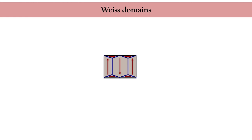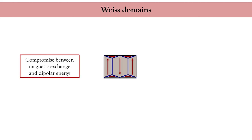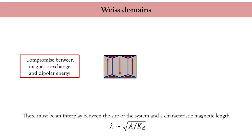You cannot repeat this procedure indefinitely because each magnetic domain wall you create costs energy. As a consequence, the magnetic texture of a given material comes out of a compromise between the magnetic exchange, the anisotropy, and the dipolar energy. The average size of the magnetic domains is characterized by a so-called exchange length, roughly proportional to the square of the ratio between the magnetic exchange energy and the anisotropy energy.